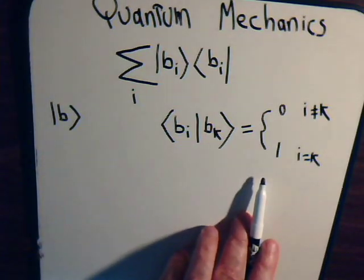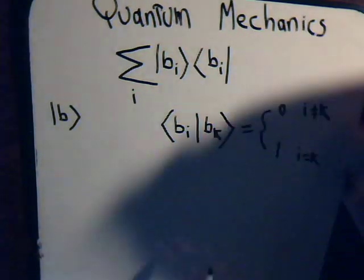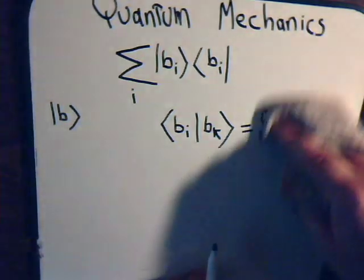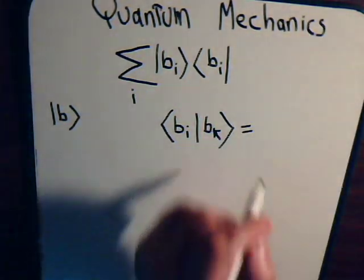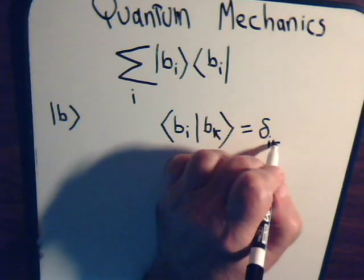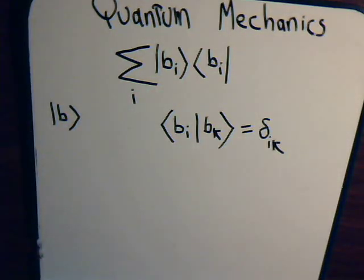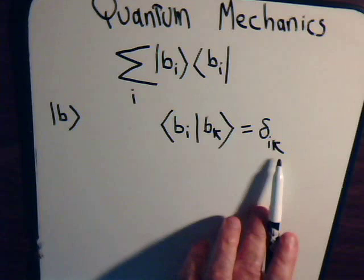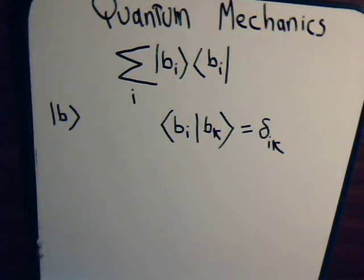And the other way of designating this relationship is just to use the Kronecker delta symbol. And this equals one when i equals k, and it equals zero when i does not equal k.